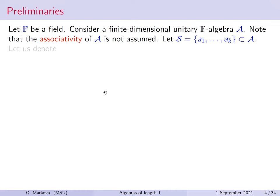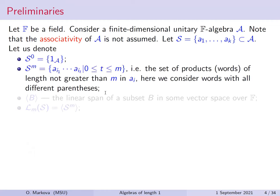We have an arbitrary field F. F is just an arbitrary field. We consider a finite-dimensional algebra which is unitary — so the algebra has a unit. Notice that we don't assume associativity of the algebra; it's just some arbitrary but finite-dimensional algebra. We take a finite subset of this algebra and use the following notation.